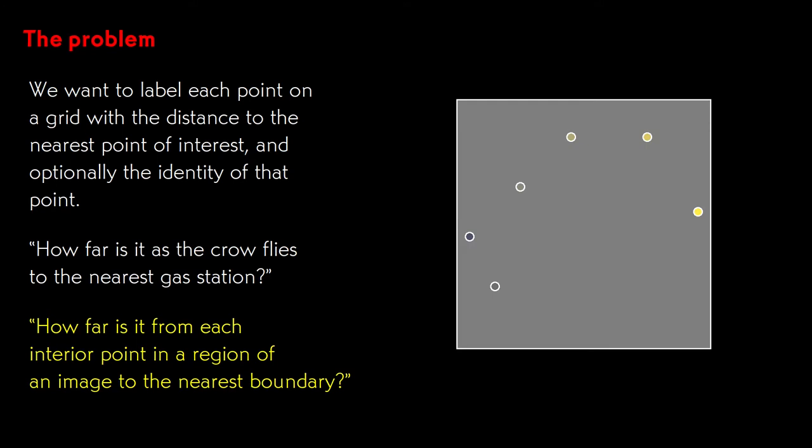For each point, we want to find the grid points that are closer to it than any other, and to compute the distance from each grid point to the nearest point of interest.